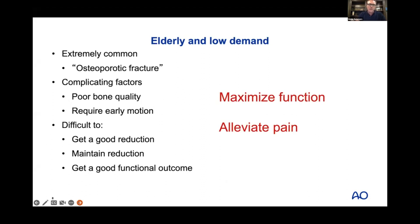For the elderly and low-demand patients, these are extremely common osteoporotic fractures with complicating factors and typically poor bone quality. Patients who begin early range of motion — even passive pendulum exercises — tend to have better outcomes. In the elderly it's difficult to get a good reduction, maintain that reduction, and achieve a good functional outcome, so sometimes we do things to maximize function and alleviate pain knowing we may not restore normal function.